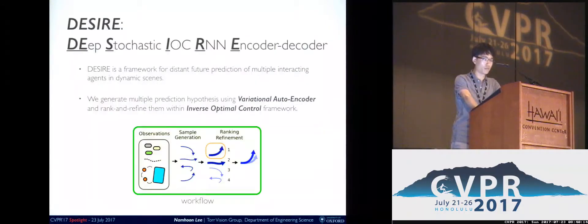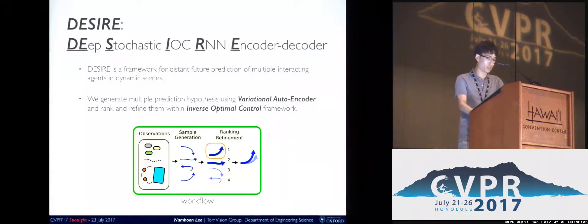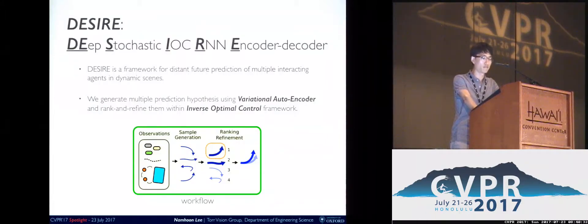In order to address the aforementioned issues, we've come up with a new framework called DESIRE. DESIRE stands for Deep Stochastic IOC RNN Encoder Decoder and is a deep predictive model for future prediction. In brief, DESIRE first generates multiple prediction hypotheses using a variational autoencoder, and then ranks and refines them using an RNN decoder based on a strategy of inverse optimal control.